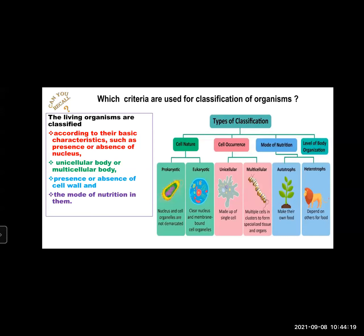The second criteria was the cell structure or cell occurrence — that means unicellular body or multicellular body. The third criteria which was considered was presence and absence of cell wall. This year we have studied presence and absence of cell wall — we are going to talk about plant cell and animal cell. The fourth criteria was the mode of nutrition, whether the organism is autotrophs or heterotrophs. On the basis of mode of nutrition, the organisms were classified. These were the few criteria which were considered while doing the classification of organisms.